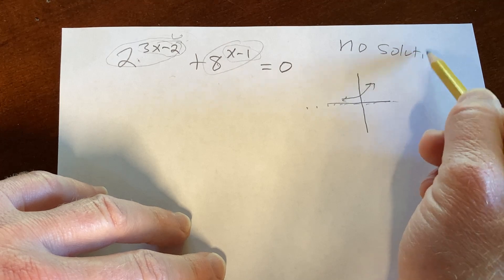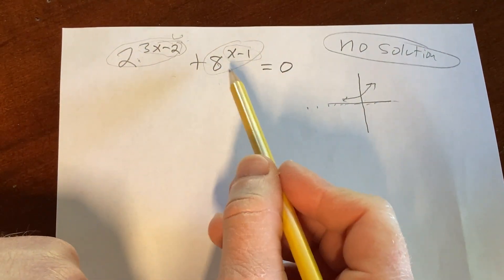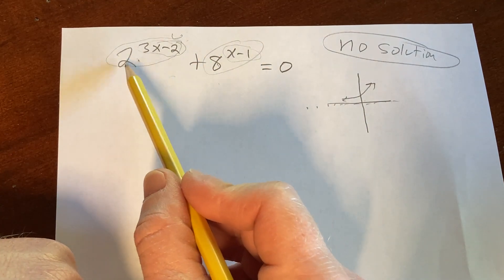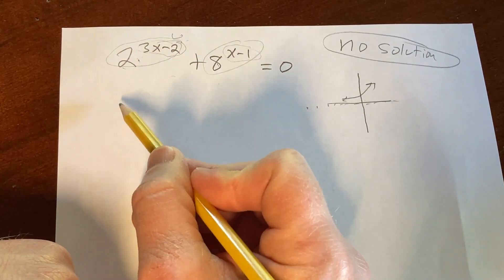But let's suppose that you weren't feeling that you could determine that. So what you would typically do in a problem like this is you would write both exponential expressions using the same base. So let's write this one again.